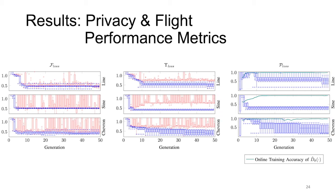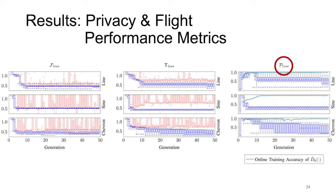Results are reported for three separate evolution processes, one for each trajectory type. From left to right, we present plots for different metrics. The first is the flocking performance loss over 50 generations: the blue distribution describes the evolution of performance loss for chromosomes in the GA's population, while the red one describes evolution for the experimental chromosomes. SGA efficiently reaches good values of performance loss within 10 generations for all reference trajectories. The third plot displays the evolution of the privacy loss distribution, as well as the training accuracy of the CNN. Notably, improvements in privacy loss are slower than those in performance loss, and the training accuracy of the CNN converges slower for the sign reference trajectory.